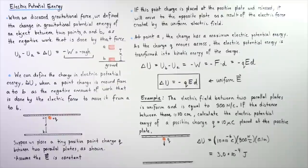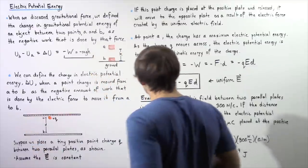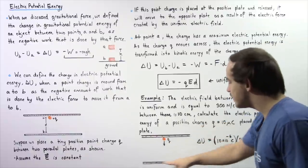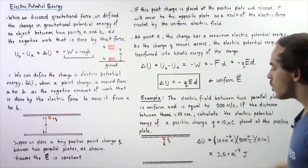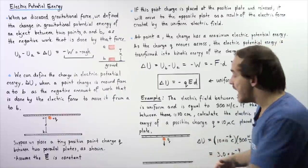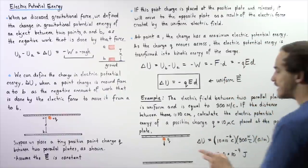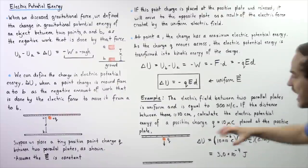Let's look at the following example. The electric field between two parallel plates is uniform and equal to 300 newtons per coulomb. The distance between the plates is 10 centimeters. Calculate the electric potential energy of a positive charge Q of 10 microcoulombs placed at the positive plate. We have the same setup as before: a positive and negative plate separated by distance D equal to 10 centimeters, or 0.1 meters. The positive charge is placed on the positive plate and has maximum electric potential energy at that position.